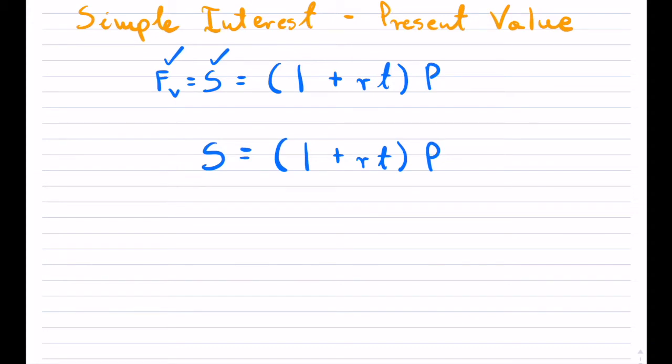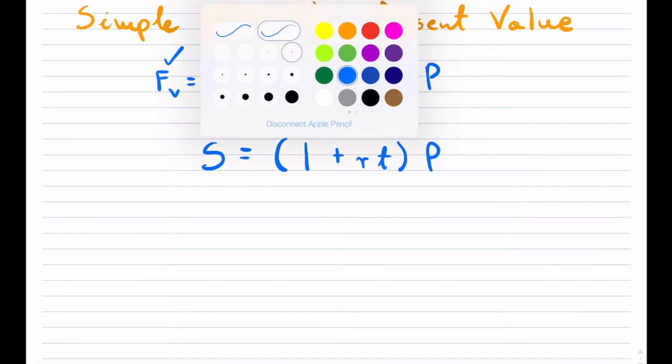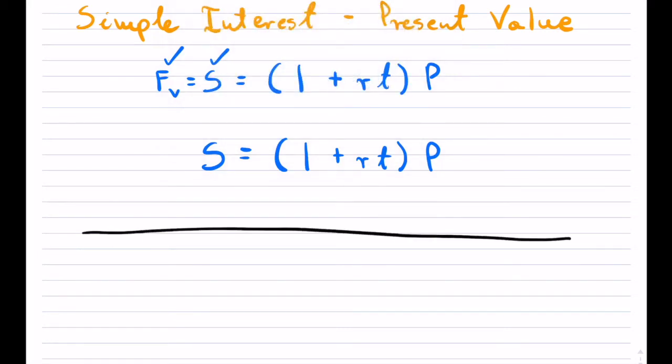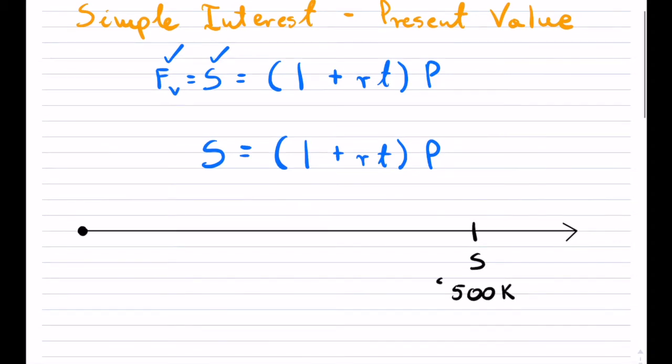Now what if instead we had the problem and we were trying to find the problem where we were now going from the future back into the present. So for instance, an example can be asked where you're saying that in 20 years I would like to have half a million dollars. And that would be sometimes in the future. So this is actually your summation or your future value. And let's say that it was $500,000 that we wanted to have in the future.